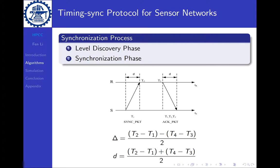Then according to the level ID, each node synchronizes with its parent node by pairwise synchronization. Given parent node R and child node S, let's look at the figure. In order to synchronize with parent node R, node S will send a synchronization request packet with a timestamp T1, and the parent node R will record the time T2 once it receives the packet.